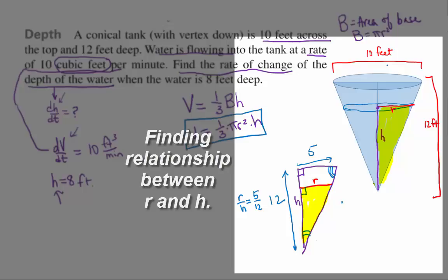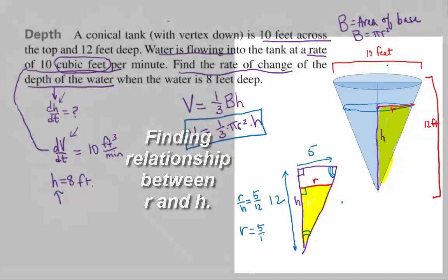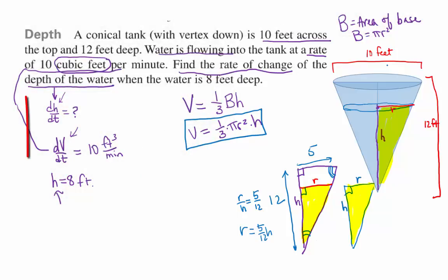So how can I write R? R equals 5/12 of H. Since we don't have any information about the radius over here, how about instead we replace the R in this formula with 5/12 of H, because we do have information about H.